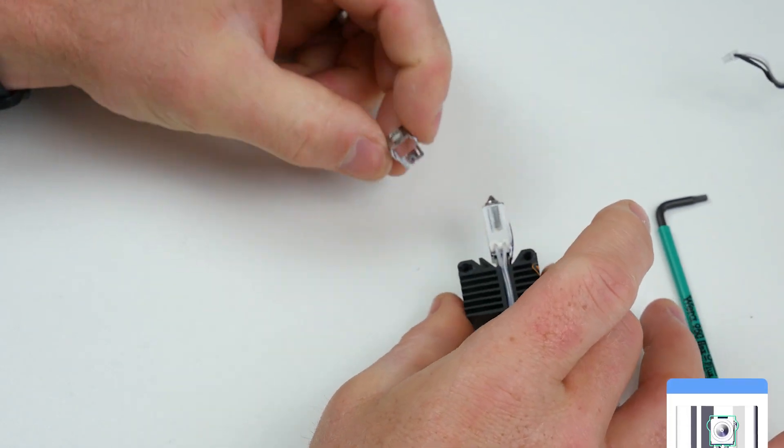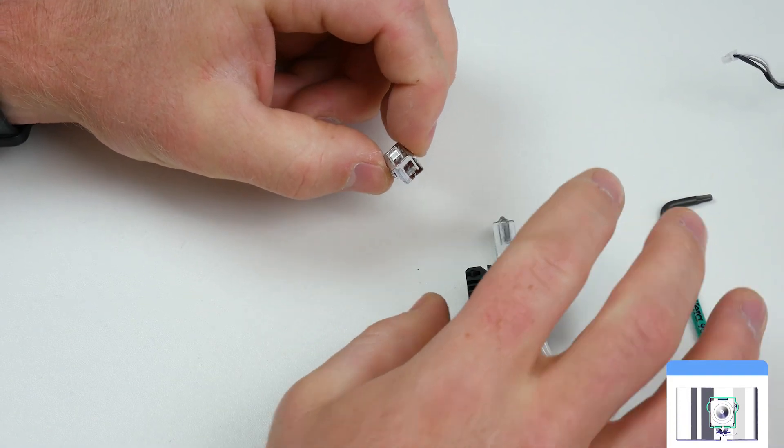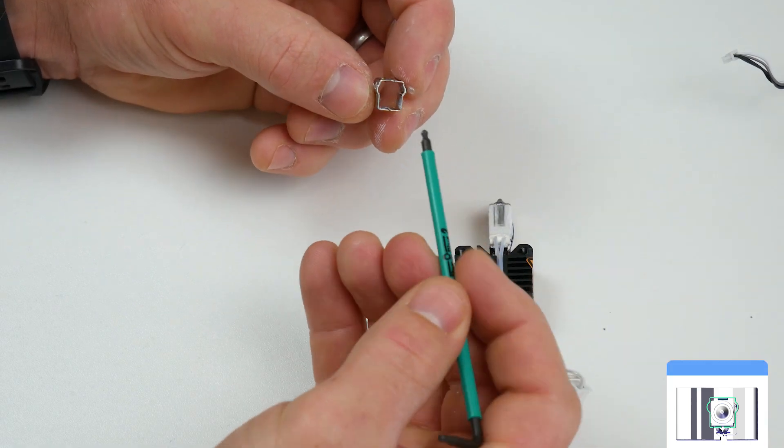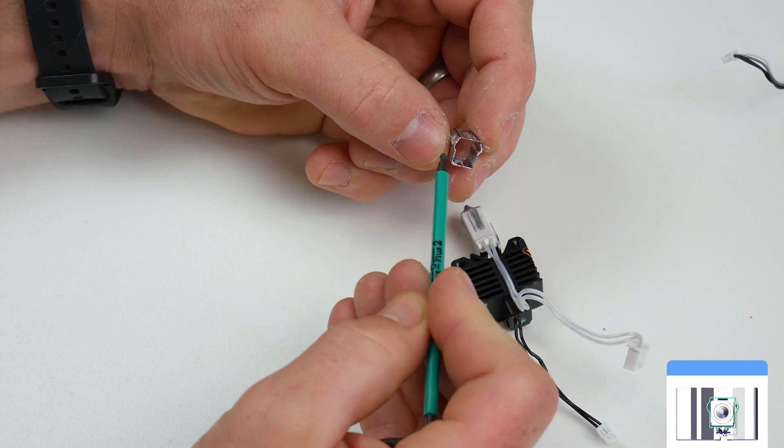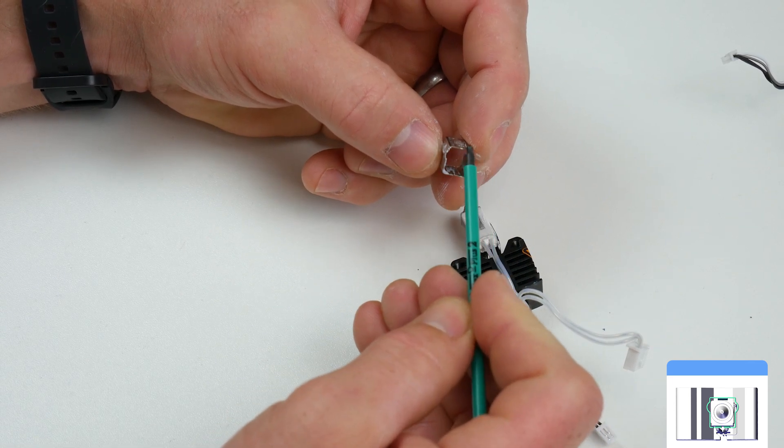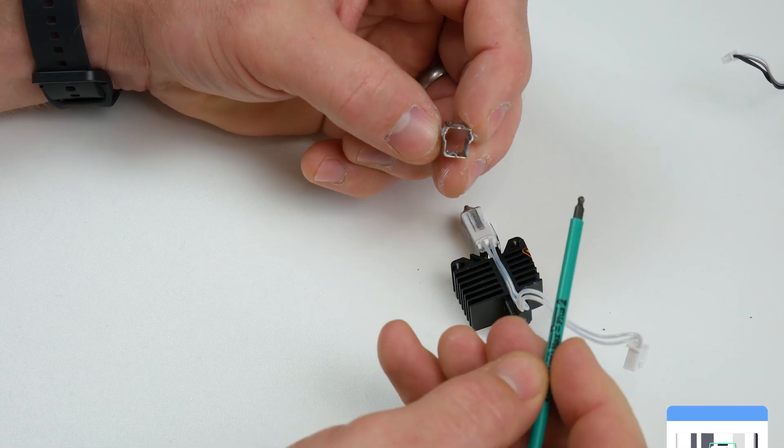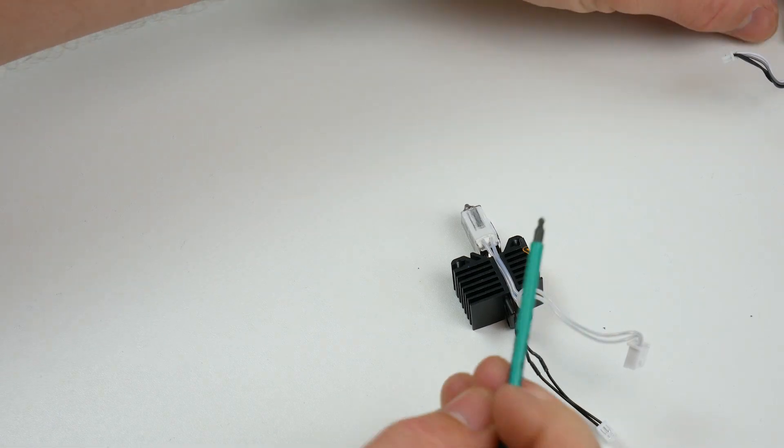So we've now removed that. I'm going to pop this little retaining clip. Note that it's got two raised areas on either side. It's not completely square, so it's got a slight raised area on one side here and on the other side here. So we're just going to keep an eye on this. We'll come back to that in a moment.